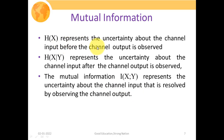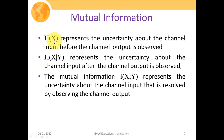Here H(X) represents the uncertainty about the channel input before the channel output is observed. The entropy of source X is H(X) = −Σ P(xi) log P(xi), which we have already discussed. Similarly, H(X|Y) represents the uncertainty about the channel input after the channel output is observed. Whereas the mutual information I(X; Y) represents the uncertainty about the channel input that is resolved by observing the channel output.